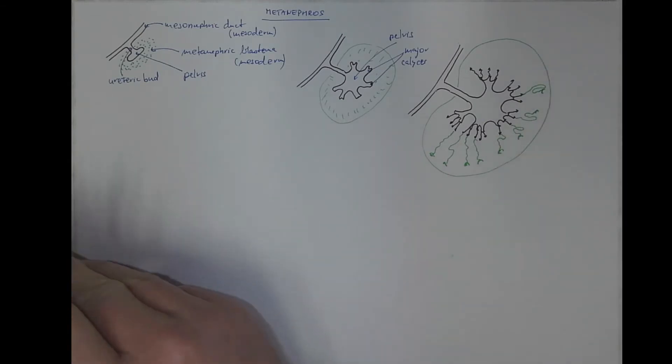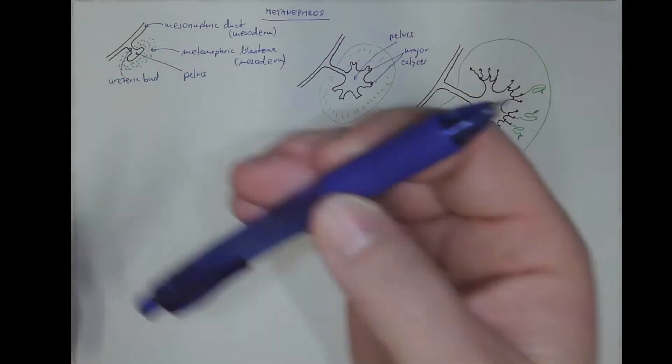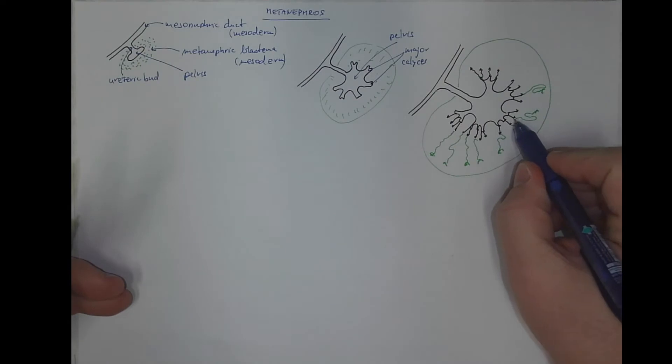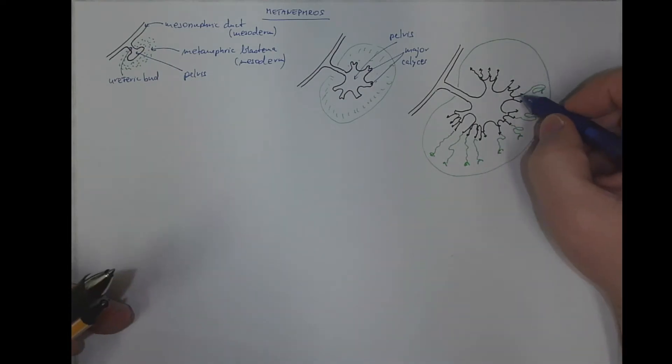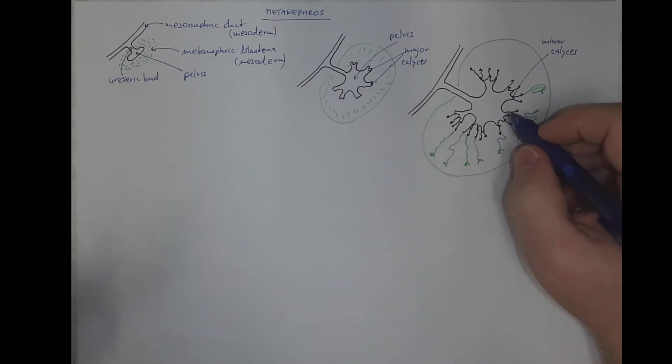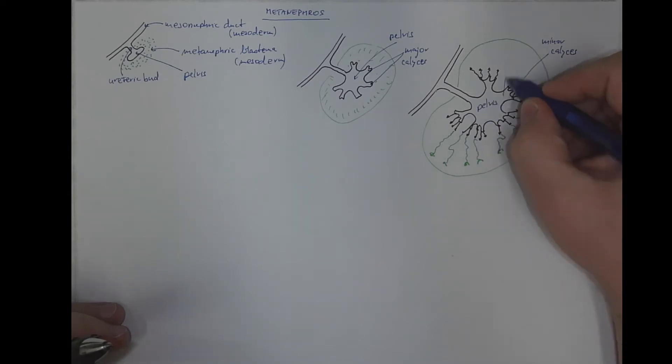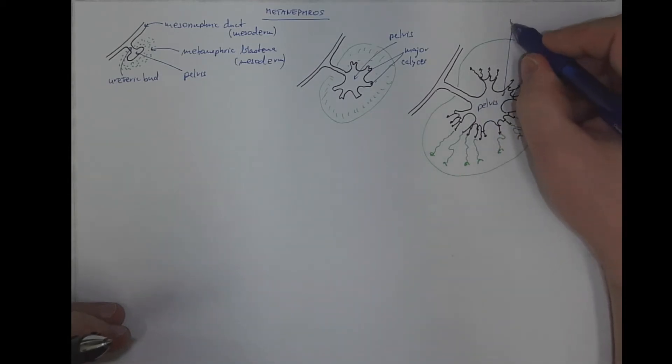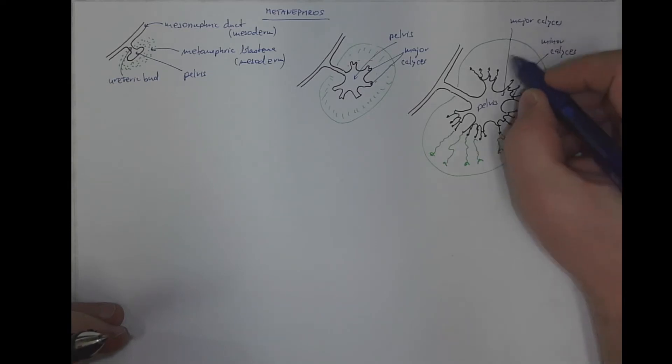Now, the point is that these two microscopic tubules have to meet somewhere. So these are the minor calyces, the branches of the major calyces, as is the pelvis, this is the major calyces, the minor calyces.